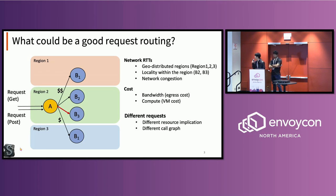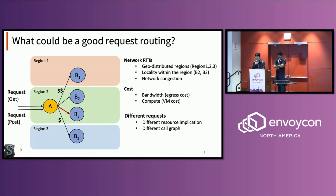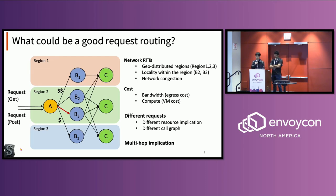There could also be different request types. Different requests might lead to different resource usage or different call graphs. And this is not a single simple single-hop client-server relationship, but multiple layers, so we need to consider multi-hop optimization.